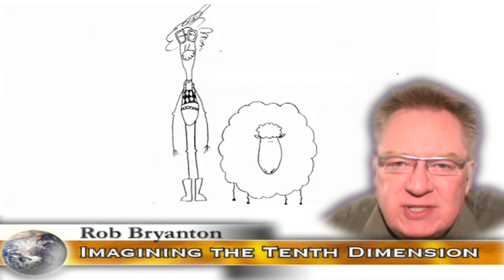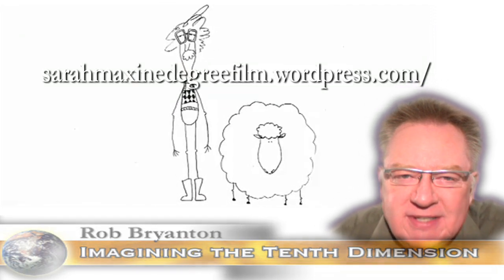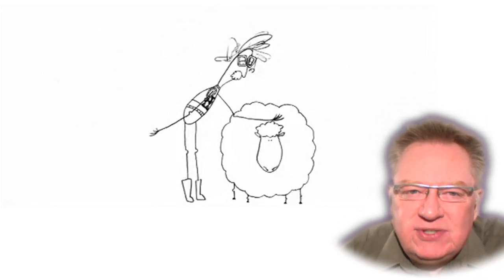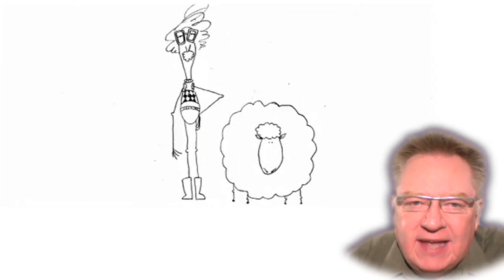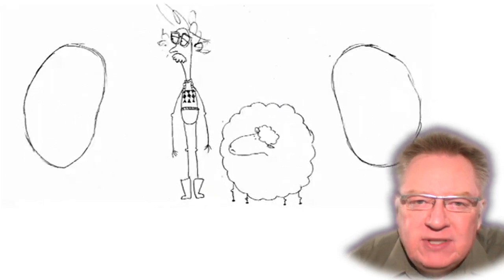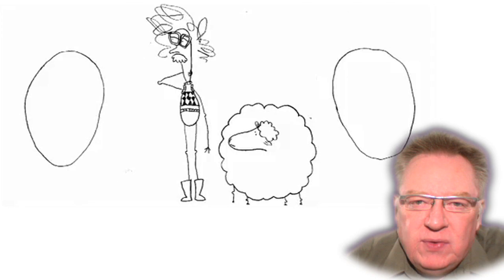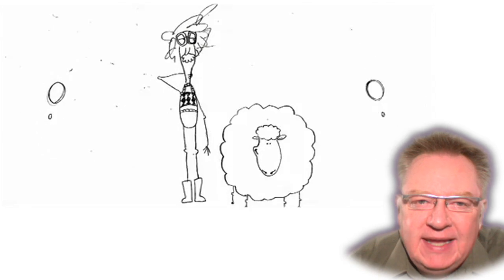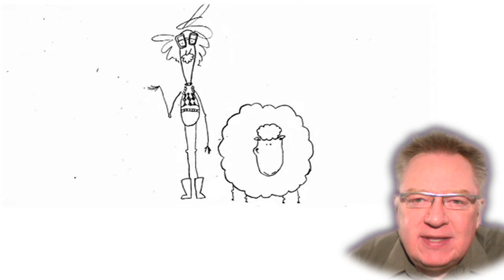Sarah said some nice things about my project on her blog, and you can read her blog if you go to SarahMaxineDegreeFilm.wordpress.com. So let's return to Edwin Abbott's imaginary 2D creatures, the Flatlanders, and the idea that a 3D person passing through the Flatlanders' plane would appear very strange indeed to the Flatlander. It has been rightly pointed out that in my original 11-minute animation, I show the Flatlander world not as they would see it, but as we would see it viewing from above their plane.